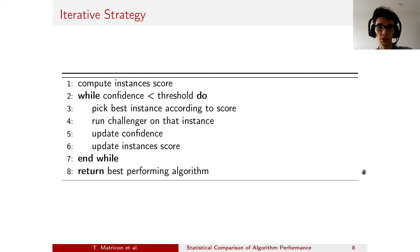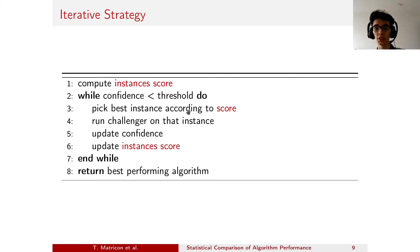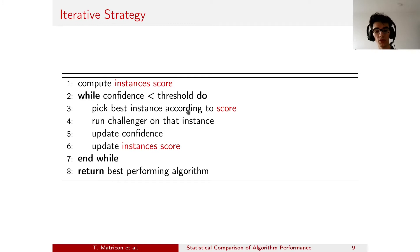There are two elements that are not clearly defined: the score and the confidence. The score is used to select the best instance to run the challenger on, and it should reflect the two objectives. An instance should have a high score if it has a high discriminatory power — being able to discriminate between the challenger and the incumbent — but also a high score if it comes at a low cost. There is a trade-off between the cost and the discriminatory power of the instance.